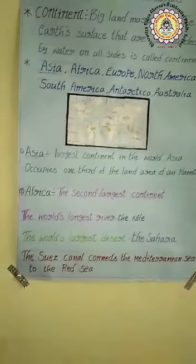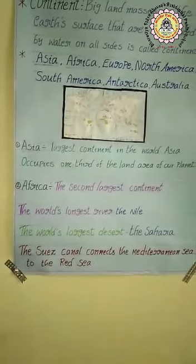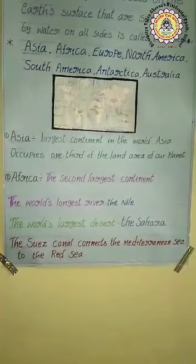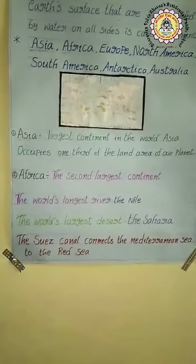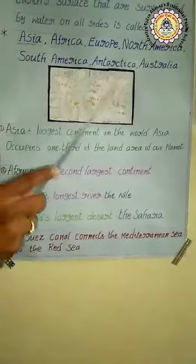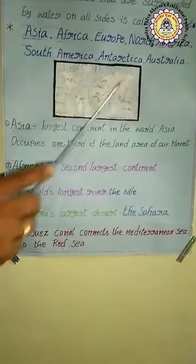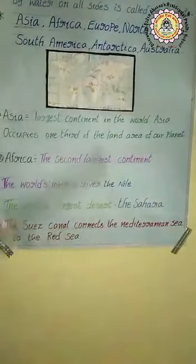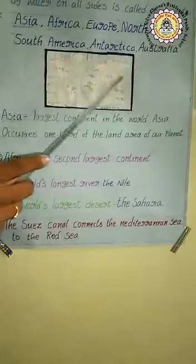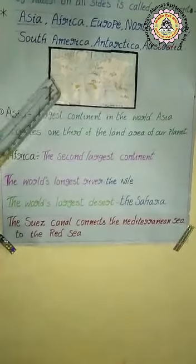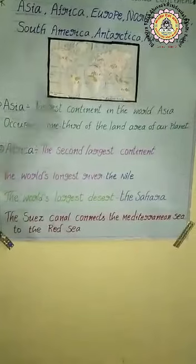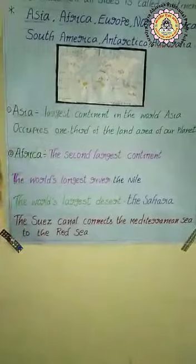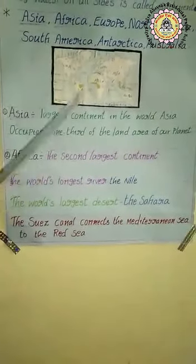Asia has the world's most populous countries: China and India. China is the first highest populated country, and India is the second. Both countries are located in the Asian continent, that's why Asia is known as the most populous continent. In Asia, there are 48 countries.